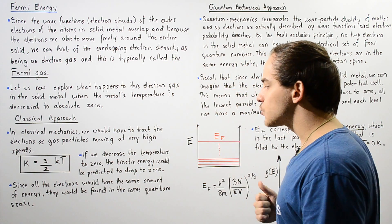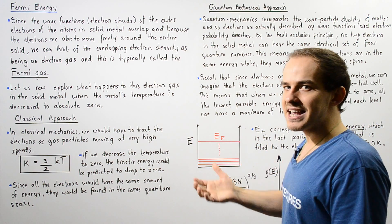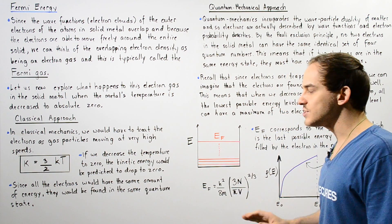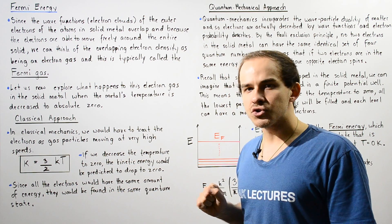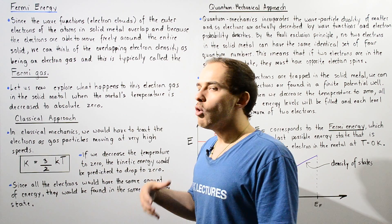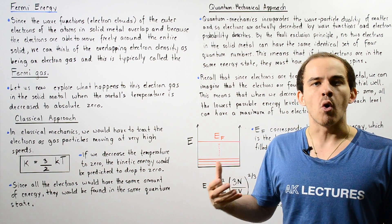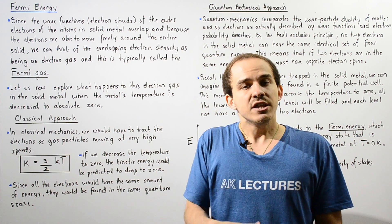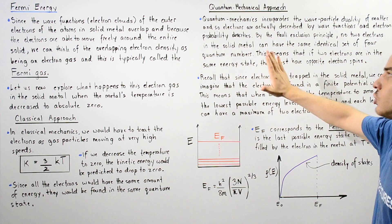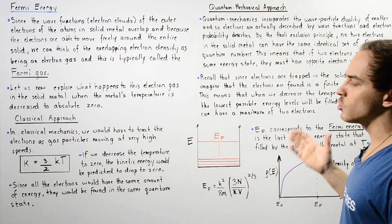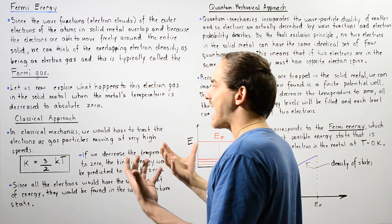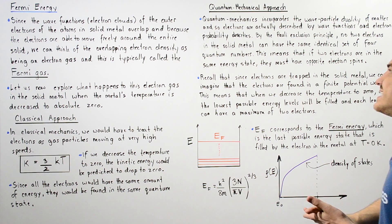Since all electrons would have the same energy — an energy of zero joules — that would imply that all the electrons inside our solid metal would be found in the same quantum state. We know that cannot take place as a result of the Pauli exclusion principle, which comes from quantum mechanics. So we see that the classical approach does not actually give us a valid result.